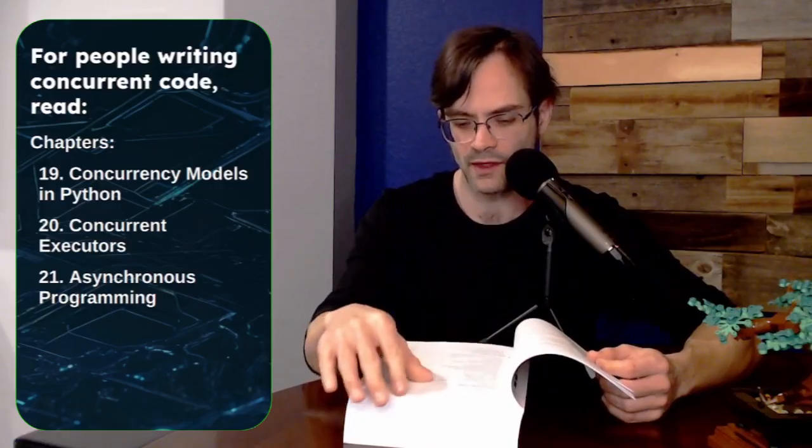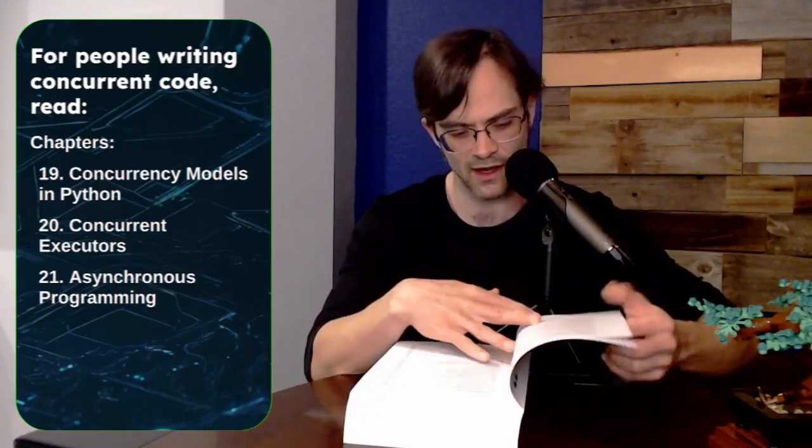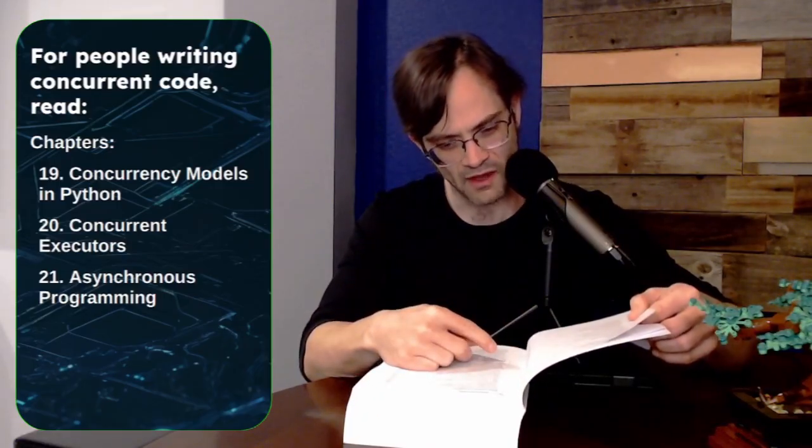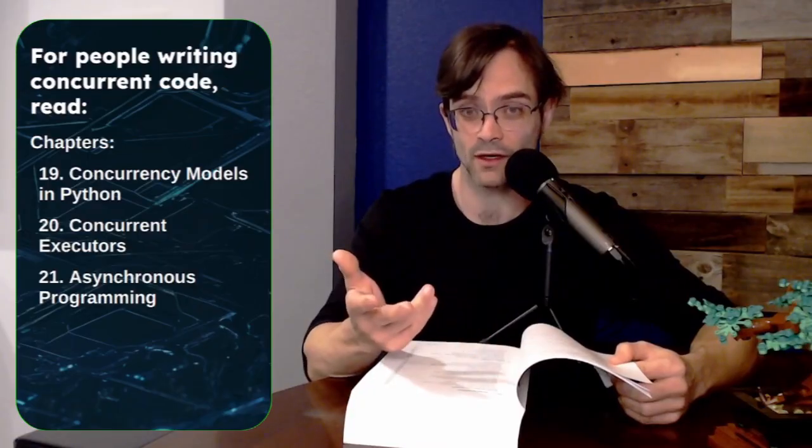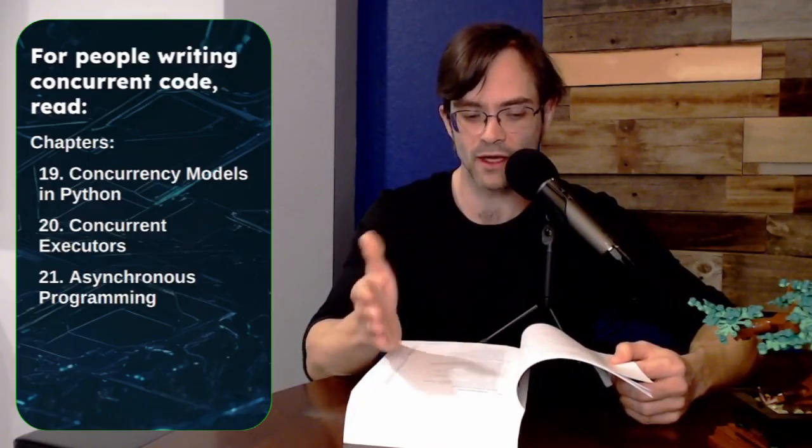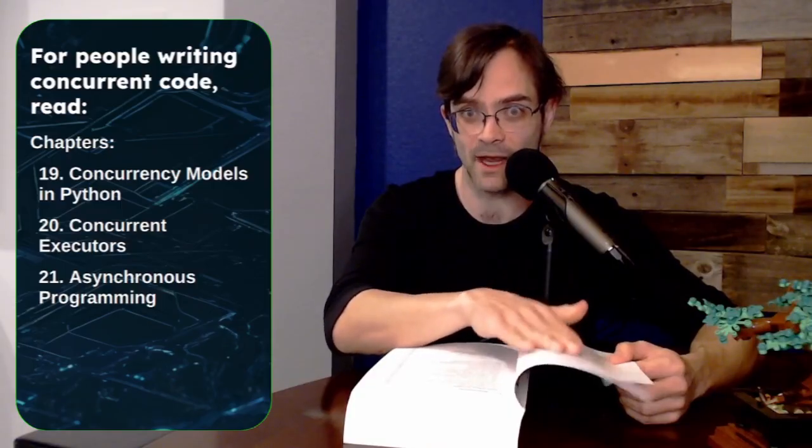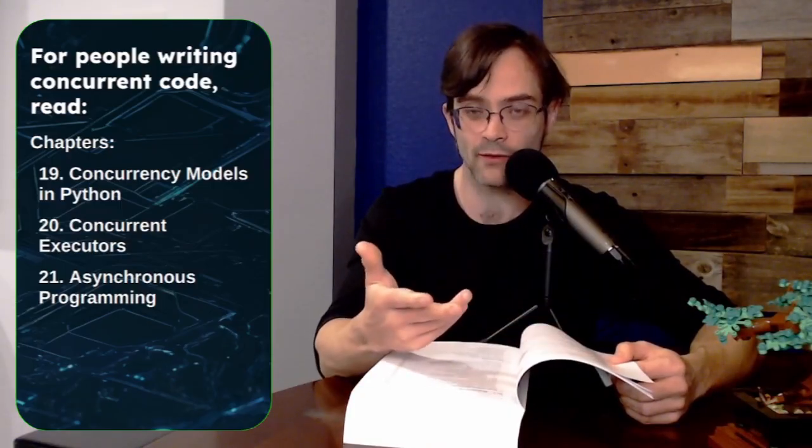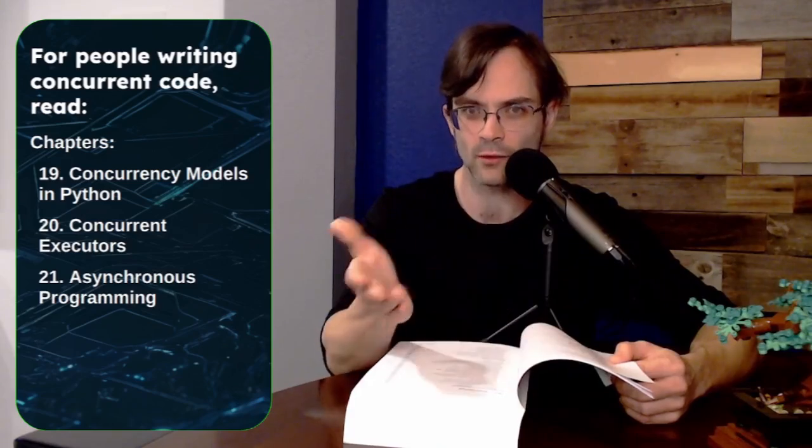So this book doesn't do that. This book goes from page 699 to about 830, just about concurrency. So that's well over 100 pages, much more thorough, and I really appreciated that more in-depth approach. Having said that, not everyone does need to write asynchronous code. So if you don't, okay, obviously go ahead and skip this section.